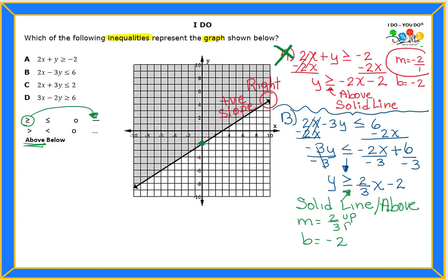Let's verify the slope: I'll go 2 up and 3 to the right — all my points land on the line. Going the opposite direction, 2 down and 3 to the left — all points land on the line too. So the answer has to be letter B: the slope is positive, the y-intercept is correct, it's a solid line, and it is shaded above.